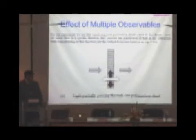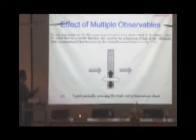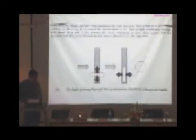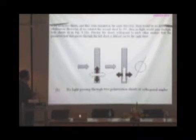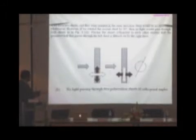We look at the effect of multiple observables. For our experiment, we use a thin semi-transparent polarization sheet, which we orient in a specific direction to measure the polarization of light in the orthogonal basis corresponding to that direction — say the vertical-horizontal basis. In the first case, we shine light through one polarization sheet and light partially passes through. In the second case, we have two sheets oriented so that the second is rotated by 90 degrees, meaning no light passes through both sheets. Horizontally polarized light passes through one, and vertically polarized light can only pass through the other, so the net result is that no light passes through the two orthogonally oriented sheets.